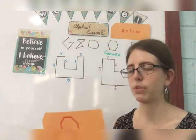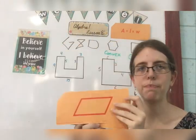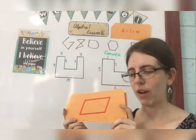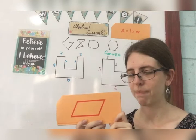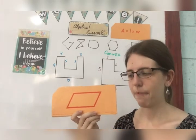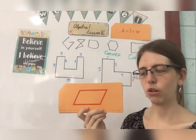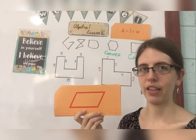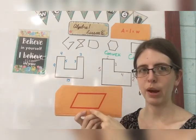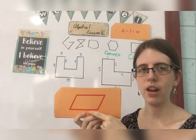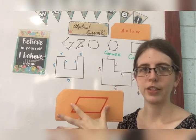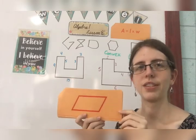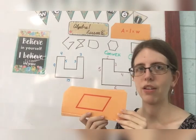This is a parallelogram. So a parallelogram is a quadrilateral with two pairs of parallel sides. So it has two pairs of parallel sides. This one and this one, they will never cross. This one and this one, they will never cross. So two pairs of parallel sides.